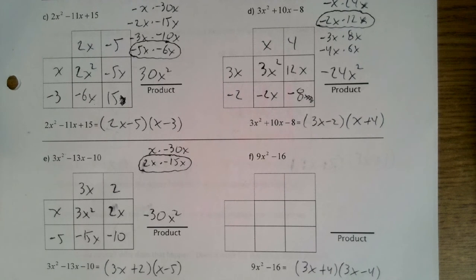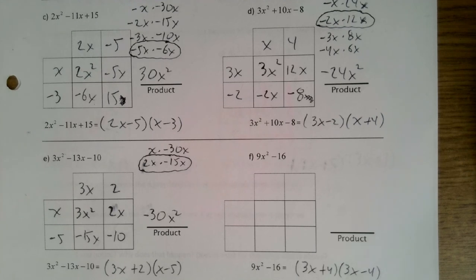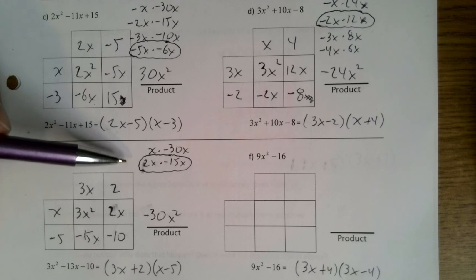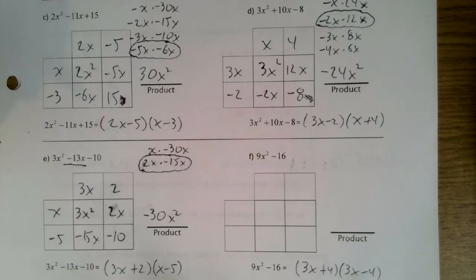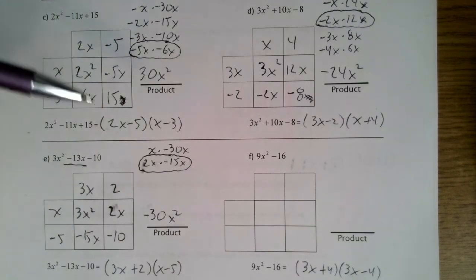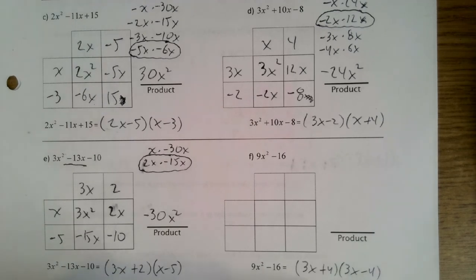Here are the answers to the last four. Sorry about the smudge marks — I wrote x's by mistake and scratched them out. On this one, when I got 2x times −15x I could see it multiplied to −13x, so I knew right away what to put in. For part f, the chart is actually not the best approach here — recognize it as a difference of squares: 3x squared is 9x², and 4 squared is 16, so it factors as (3x + 4)(3x − 4).